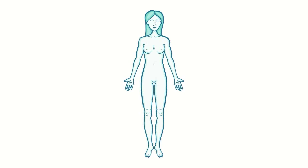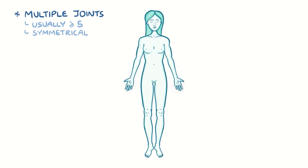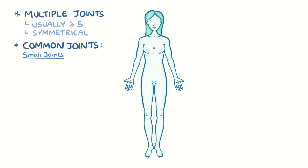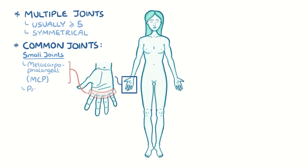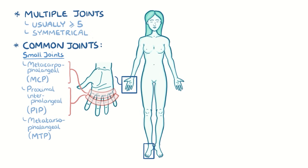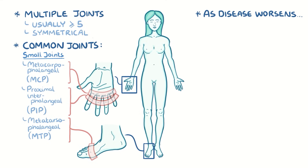Rheumatoid arthritis typically involves multiple joints, usually five or more, symmetrically — meaning the same joint groups on both sides of the body, like both hands. Commonly affected joints are the small joints, like the metacarpal phalangeal joints and proximal interphalangeal joints of the hand, and the metatarsal phalangeal joints of the feet. As the disease worsens, it can start to affect large joints, like the shoulders, elbows, knees, and ankles.